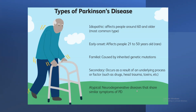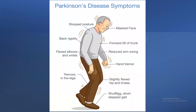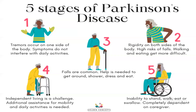Symptoms of Parkinson's disease include stooped posture, masked face, back rigidity, forward tilt of the trunk, reduced arm swing, hand tremors, flexed elbows and wrists, tremors in the legs, slightly flexed hip and knee, and a shuffling short-stepped gait.